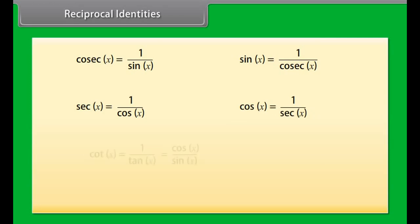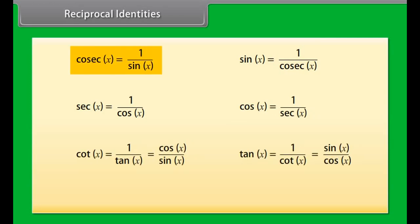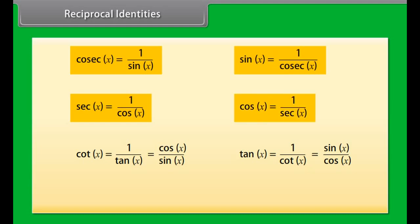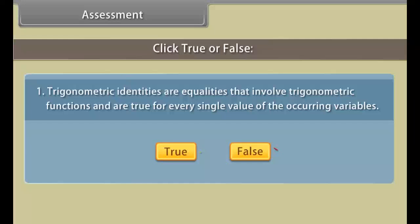Reciprocal identities — look at these identities now. Cosecant X is equal to 1 by sine X. Sine X is equal to 1 by cosecant X. Secant X is equal to 1 by cosine X. Cotangent X is equal to 1 by tan X, which is equal to cosine X by sine X. And tan X is equal to 1 by cotangent X, which is equal to sine X by cosine X.